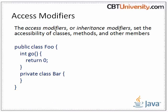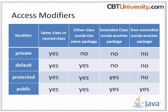The access modifiers, or inheritance modifiers, set the accessibility of classes, methods and other members. The access modifiers in Java specify accessibility of a class, constructor, method or data member. Java access modifiers are private, default, protected and public.